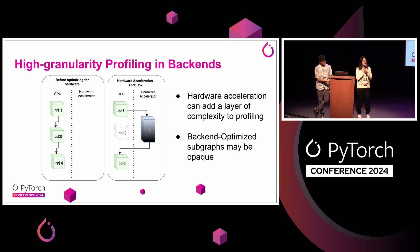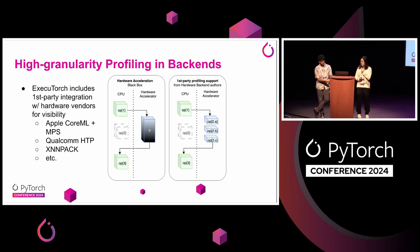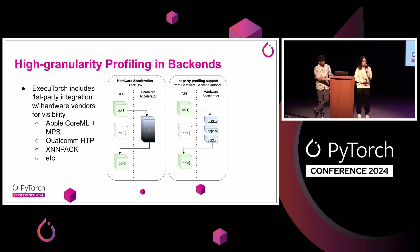Sometimes it's more complicated to do profiling — for example, when part of the graph runs on a hardware accelerator. Luckily, with Executorch we have enabled surfacing the op-level latency from hardware accelerators. For hardware such as Apple Core ML, Qualcomm, and XNNPack — the first-party backends integrated with Executorch — we can see the per-op latency.